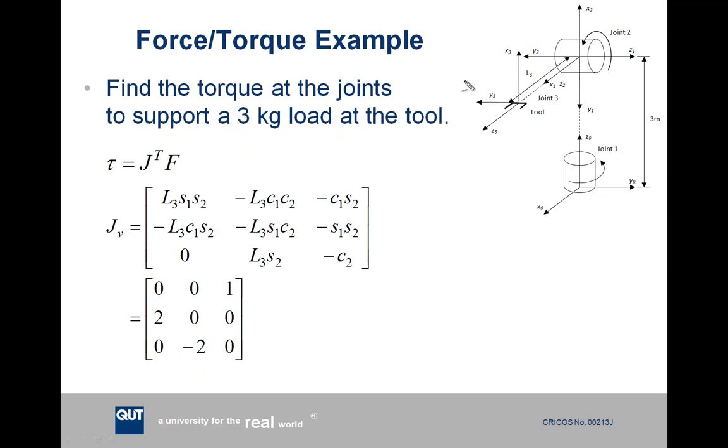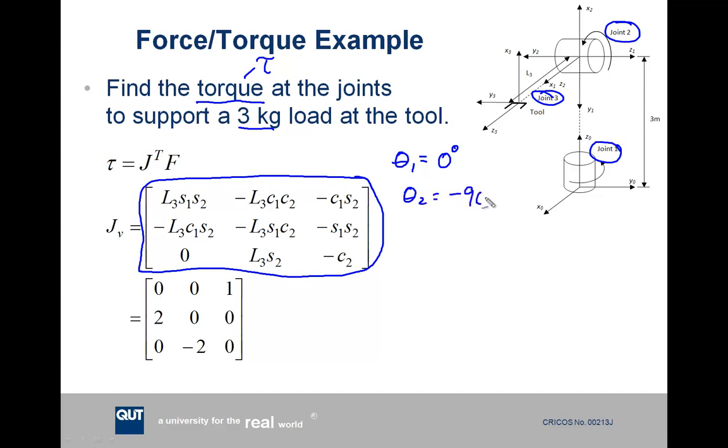So we'll do a force torque example once again with our 3-joint robot. The question here is to find the torque at the joints to support a 3kg load at the tool. So we have our linear velocity Jacobian already. Now we know that from our previous analysis, theta 1 equals 0 degrees, theta 2 equals negative 90 degrees, and L3 equals 2. So we've got all of those terms, so we have the Jacobian already worked out. And that's what it's calculated at the bottom.